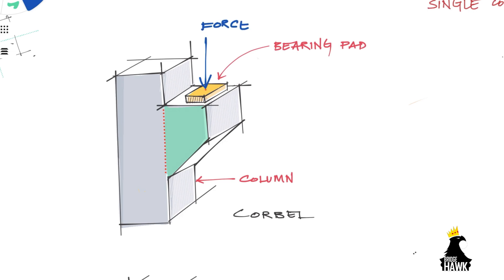They are also called brackets. A corbel is typically characterized by a shear span to depth ratio lower than unity. A span to depth ratio greater than one indicates the member is a bending member.